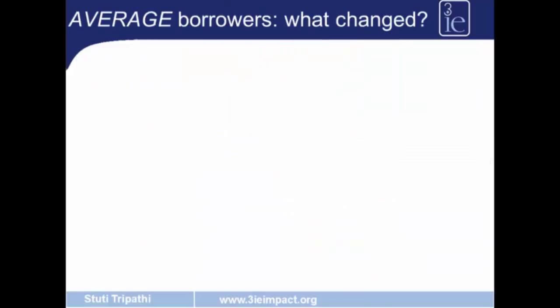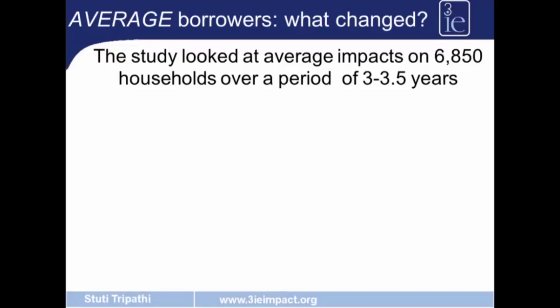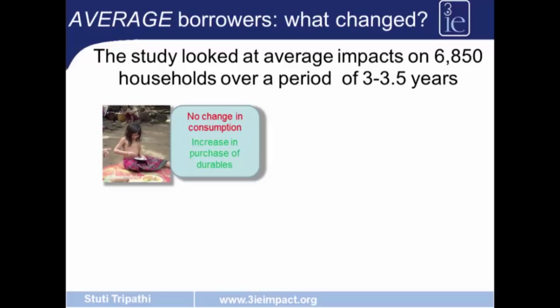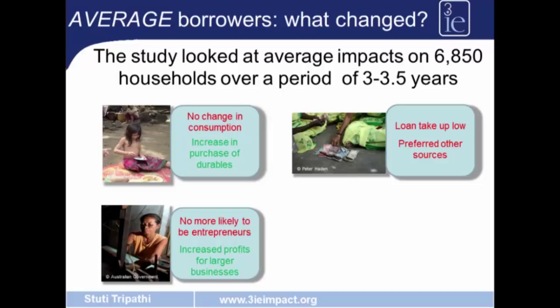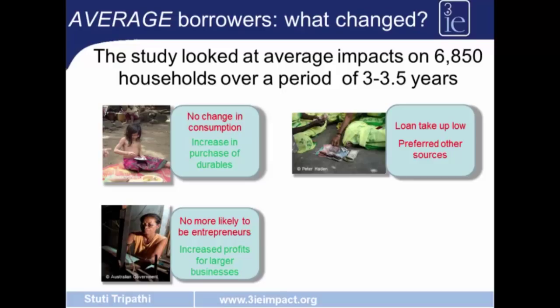So what did microfinance actually change for an average borrower? The study looked at average impacts on 6,850 households over a period of 3 to 3.5 years. The study found no change in the average consumption of borrowers; however, there was an increase in the purchase of durables. On loans, there was low take-up and people continued to prefer other sources to borrow from. In terms of businesses, people who borrowed from microfinance institutions were no more likely to be entrepreneurs, and profit increases were only found among those with existing, larger businesses. On women's empowerment, the study found no impact.